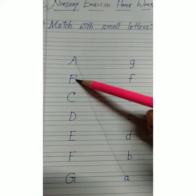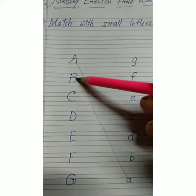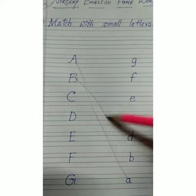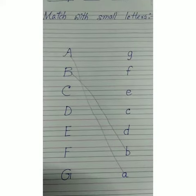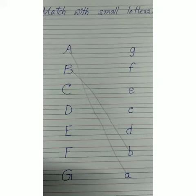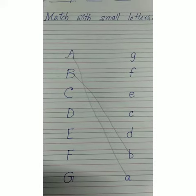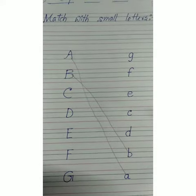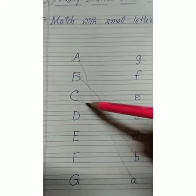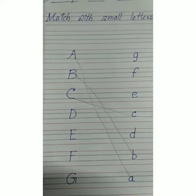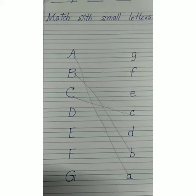This is capital letter B and this is small letter B. You have to identify the letters also. This is capital letter C and this is small letter C. You have to match.